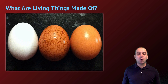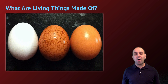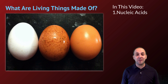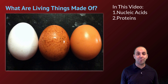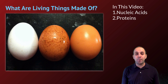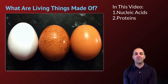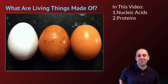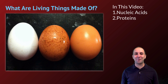We're going to be investigating the same question here that we were in our previous video: what are living things made of? In this video, we're going to talk about nucleic acids briefly, and then we're going to talk about proteins in depth. I'm showing you a picture of a food that has a lot of protein, which of course are eggs. I could have just as easily gone with meat, but meat doesn't really photograph well.